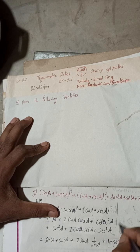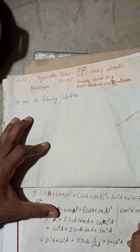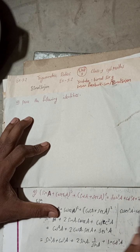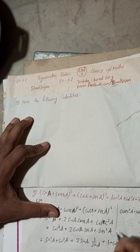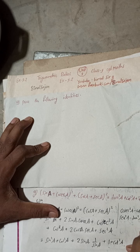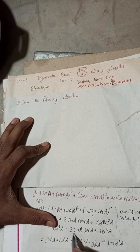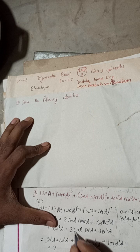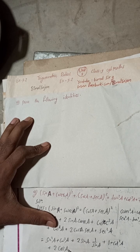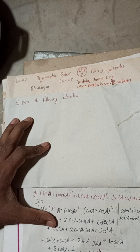Writing the formula: cosec² A minus cot² A equals 1, so cosec² A equals 1 + cot² A. Similarly, sec² A minus tan² A equals 1, so sec² A equals 1 + tan² A. And 2 cos A into sec A: sec A equals 1/cos A, so cos A cancels, giving 2. So that term is also 2.